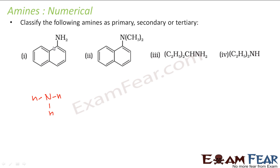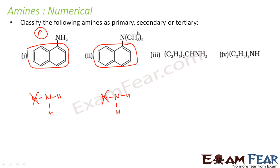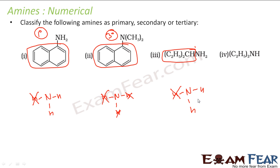Starting with NH3: in the first compound, only one hydrogen is replaced with a bulky group, so since only one hydrogen is replaced, this is a first-degree (primary) amine. For the next compound, again starting from NH3, we see that one hydrogen is replaced and the two remaining hydrogens are intact, so only one hydrogen is replaced — this is also a primary amine.